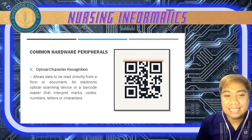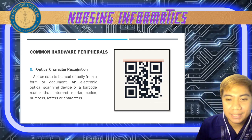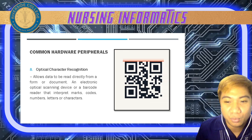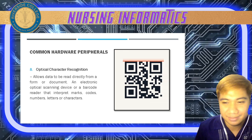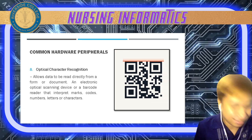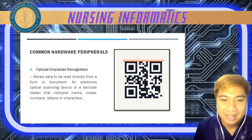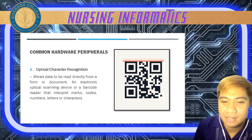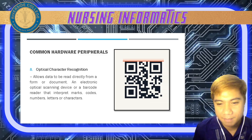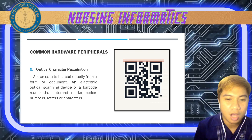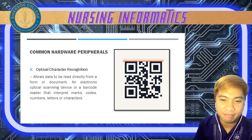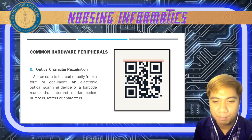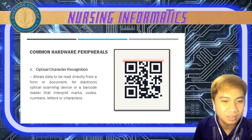Next is optical character recognition — your QR code and barcode reader. It allows data to be read directly from a form or document using an electronic optical scanning device or barcode reader that interprets the marks and codes.